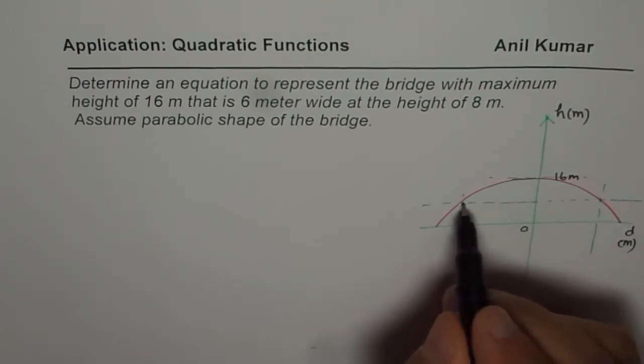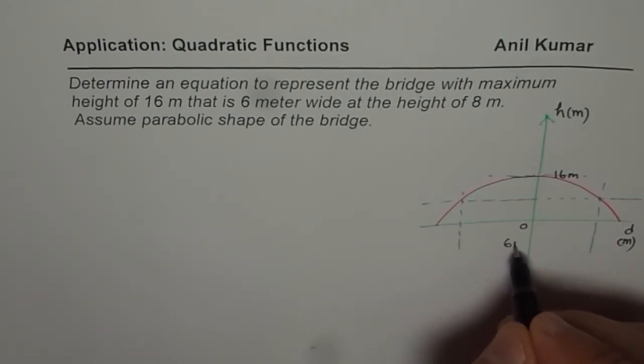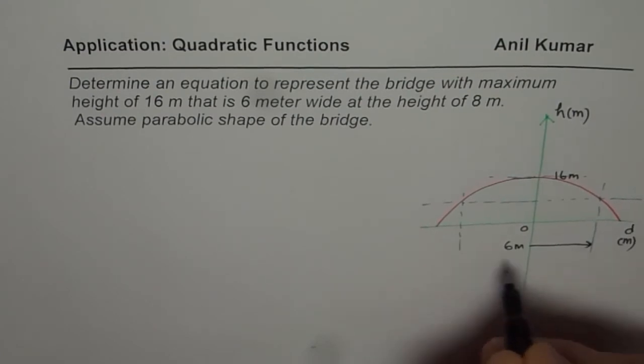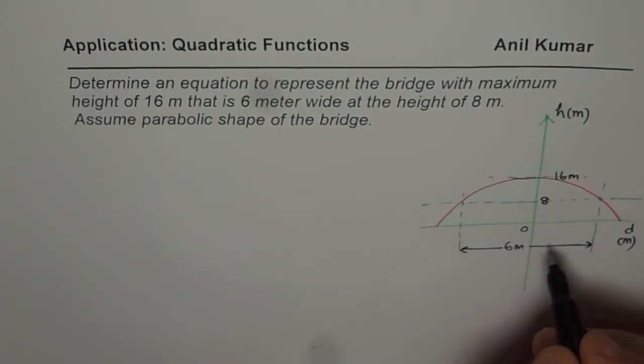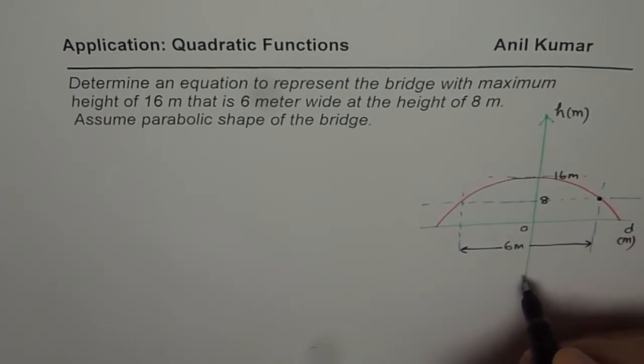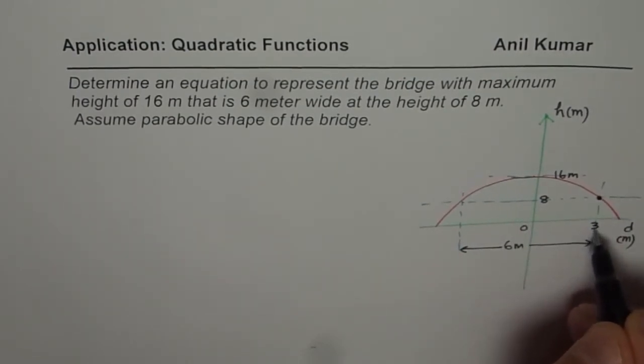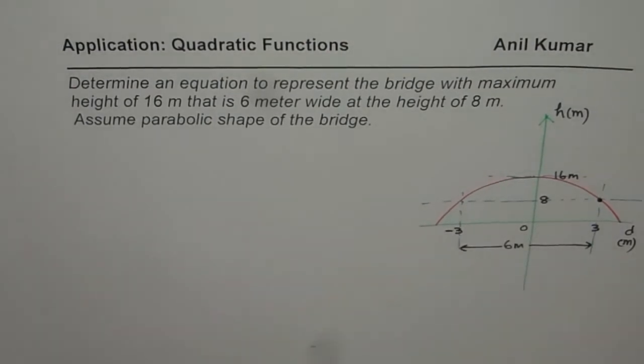Now, if I am saying this total width is 6 meters, that is from here to there. When the height is 8, in that case, this point coordinate should be what? It should be 3 away here and minus 3 from there.